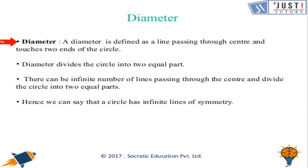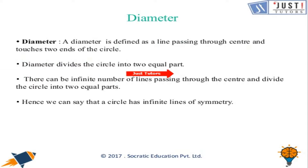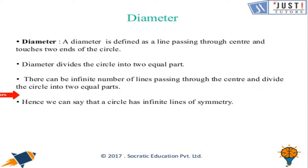Let's talk about the diameter. A diameter is defined as the line passing through the center and that touches two ends of the circle. Diameter divides the circle into two equal parts. There can be infinite lines passing through the center, which means there can be infinite diameters, and the same applies to the radius.